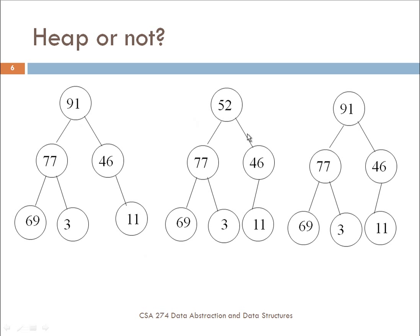Let's take a look at the second tree. 52, its children must be less than it. And if you look here, 77 is greater than 52, so this second tree is also not a heap.